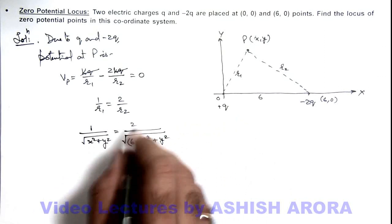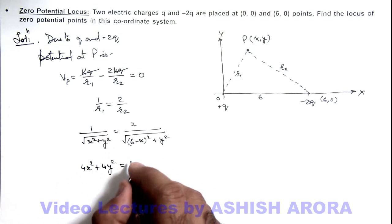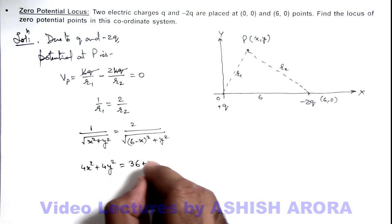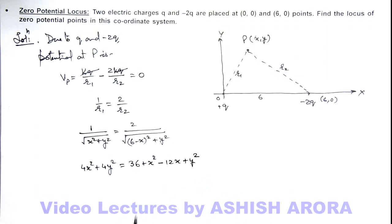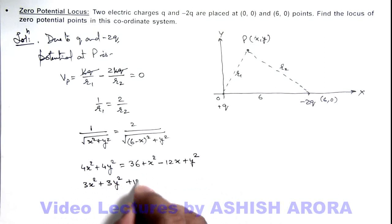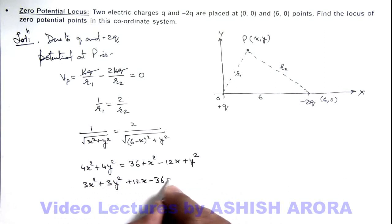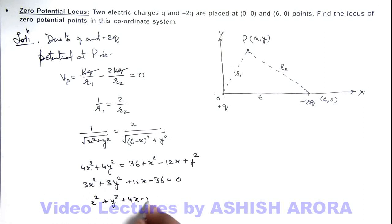Squaring and taking the reciprocal gives us 4x² plus 4y² equals 36 plus x² minus 12x plus y². Simplifying further, this results in 3x² plus 3y² plus 12x minus 36 equals zero. Eliminating the factor of 3, we get x² plus y² plus 4x minus 12 equals zero.